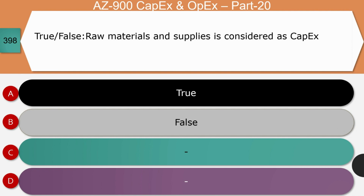True or false: Raw materials and supplies are considered as CapEx. The right answer is false. Operational expenses include the cost of raw materials and supplies, personnel costs, energy costs, and the cost for sales and administration. Operating expenses are recurring expenses that are usually paid monthly or annually.